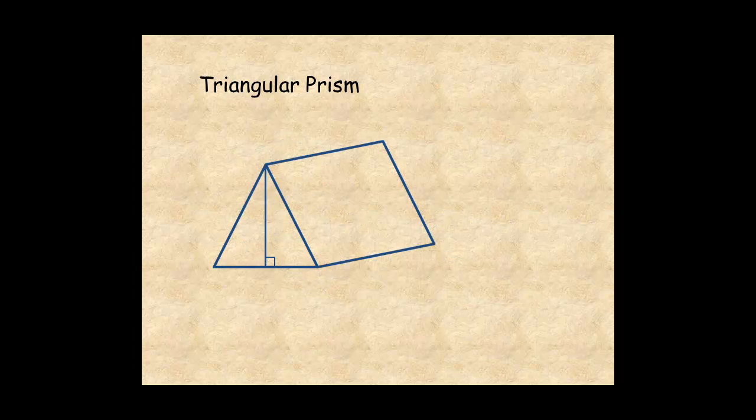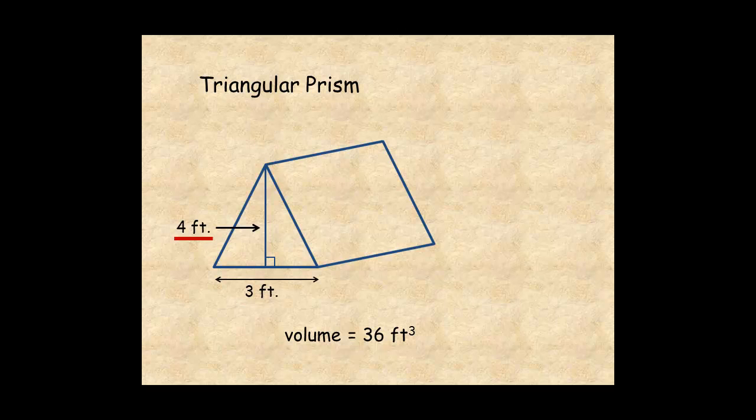To find missing dimensions, replace the variables in the formula with known values, and solve for the missing variable. In this example, you are given the volume of the prism, and the width and height of the base triangle. You need to find the height of the prism.